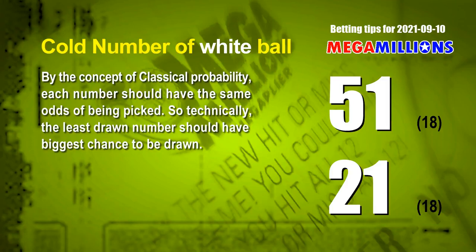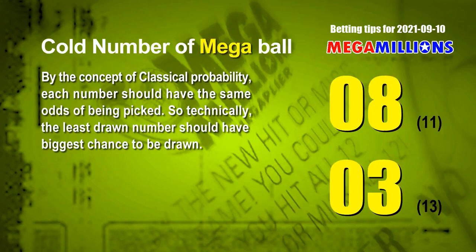We also have two more tips: cold numbers and overdue numbers. By classical probability, each number should have the same odds of being picked, so technically the least drawn number should have the biggest chance to be drawn. The two coldest white balls are 51 and 21 — both drawn only 18 times in the last 403 draws. The two coldest Mega Balls are 08 and 03: Mega Ball 08 drawn only 11 times, Mega Ball 03 drawn only 13 times in the last 403 draws.